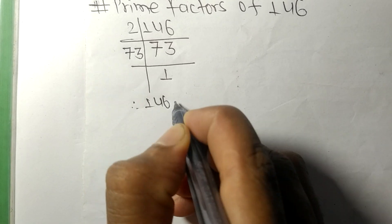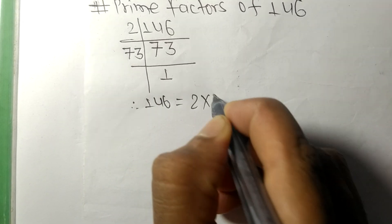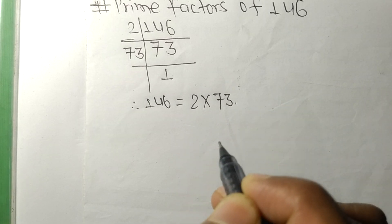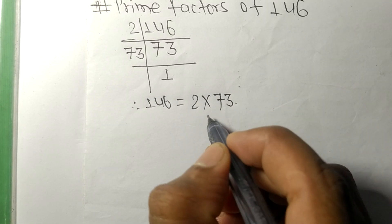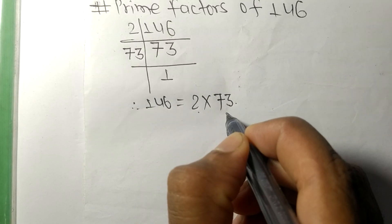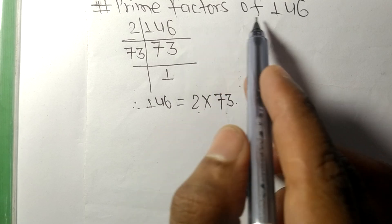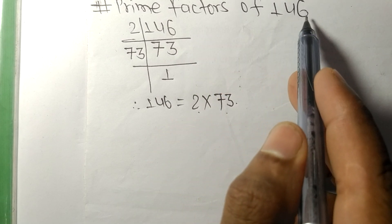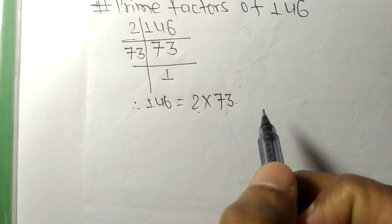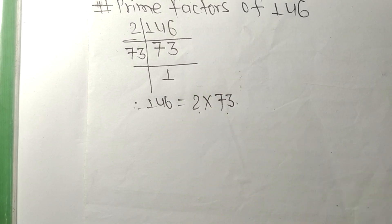So 146 is equal to 2 into 73. Therefore, 2 and 73 are the prime factors of 146. That's all for today, and thanks for watching.